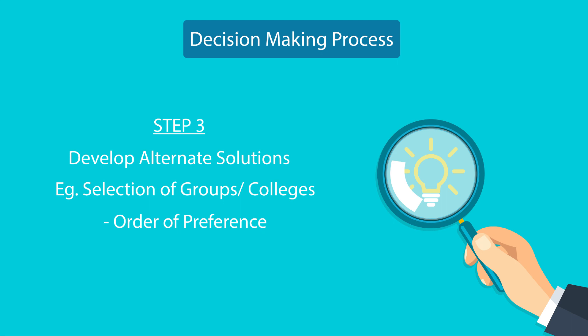Step 3 is to develop alternate solutions. I must have an order of preference, as I may not be able to get the group of my choice or the college I prefer. If I don't get a particular group or college, I must plan for the next best. If I still don't get the best, I must plan to move to another city or hostel, etc.